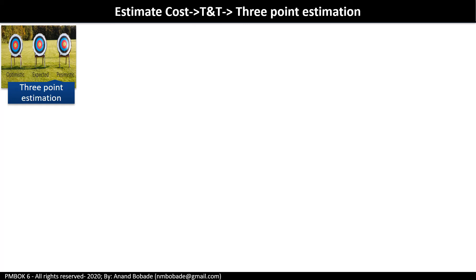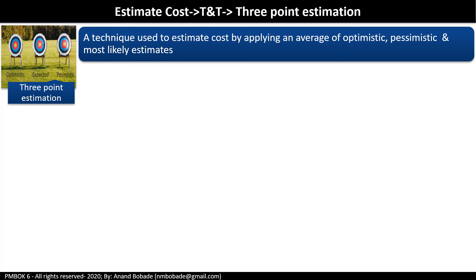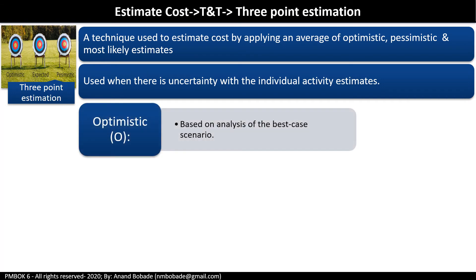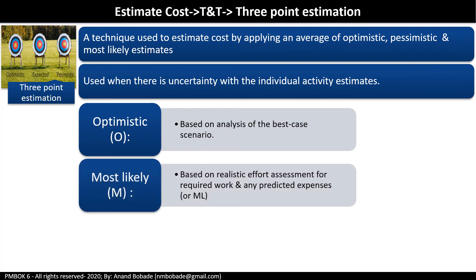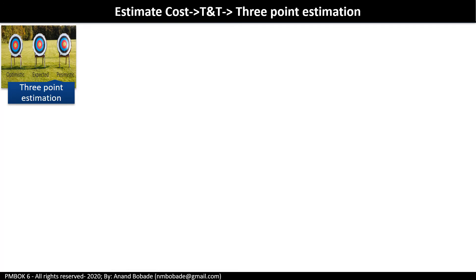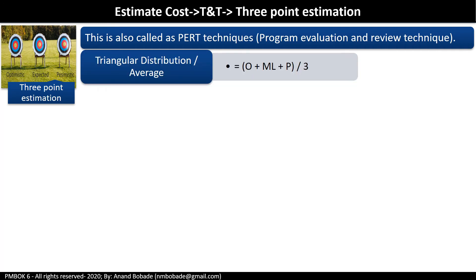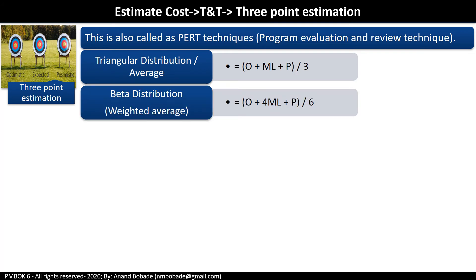Three-point estimation is used to estimate cost by applying the average of optimistic (O), pessimistic (P), and most likely (M) estimates. It is used when there is uncertainty with individual activity estimates. Optimistic is based on the best-case scenario, most likely (ML) on realistic effort, and pessimistic on the worst-case scenario. This is also called the PERT technique — Program Evaluation and Review Technique. Two formulas: triangular distribution (average) = (O + M + P) / 3, and beta distribution (weighted average) = (O + 4M + P) / 6.